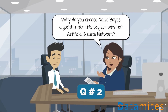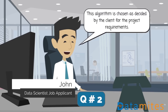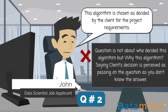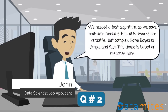Why did you choose the Naive Bayes algorithm for this project? Why not an artificial neural network? This algorithm was chosen based on the client's requirements for the project. We needed a fast algorithm, as we had real-time modules. Neural networks are versatile but complex. Naive Bayes is simple and fast, and this choice was based on response time.